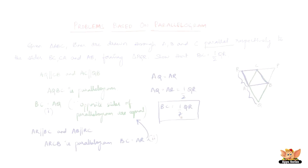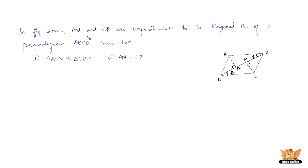Let us solve another problem. In the figure shown, AN and CP are the perpendiculars to the diagonal BD of parallelogram ABCD. What we have to prove is that triangle ADN is congruent to triangle CBP.